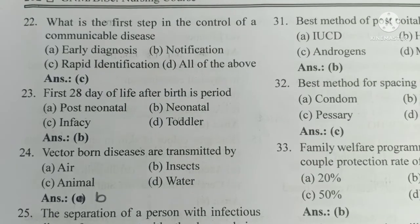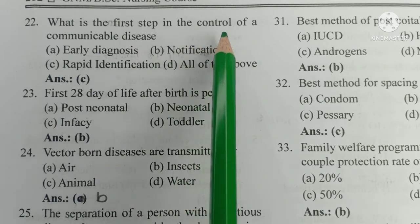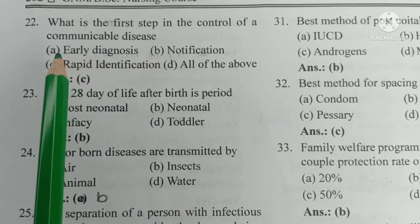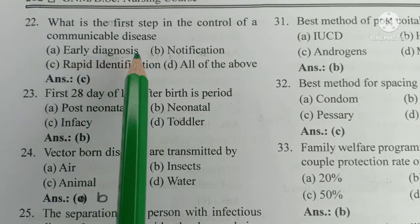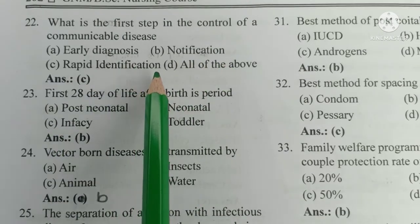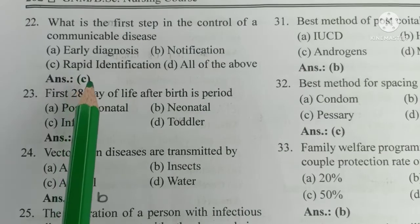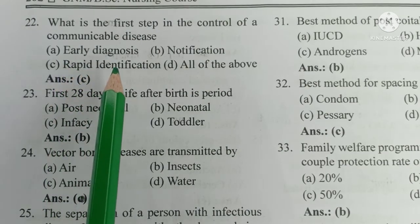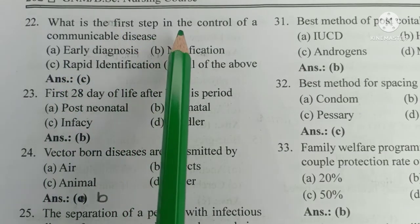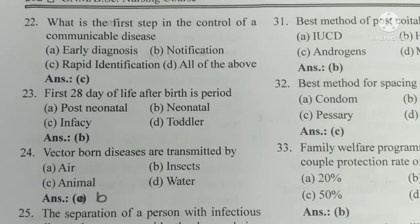Number 22. What is the first step in the control of a communicable disease? A) Early diagnosis, B) notification, C) rapid identification, D) all of above. The answer is C — rapid identification is the first step in the control of a communicable disease.